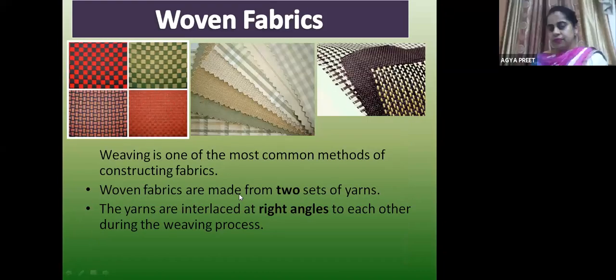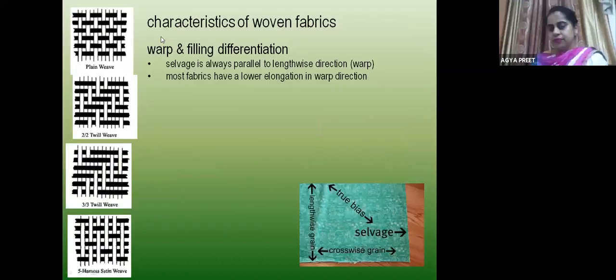After weaving, the fabric obtained is called woven fabric. Weaving is the most common method of fabric construction — two sets of yarns: warp and weft. The warp and weft yarns interlace at right angles to each other in the process of weaving. Characteristics of woven fabric depend on the warp yarn and weft yarn used.